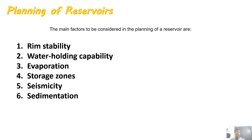Water holding capability: the area should be deep so that it doesn't cover a vast land area, since land can be very costly. We need maximum water holding capability in a minimum surface area. A smaller surface area also serves another purpose — it reduces evaporation losses.